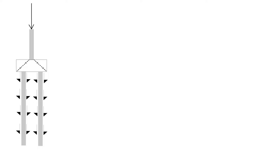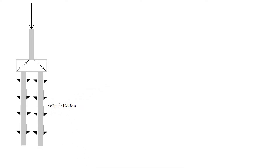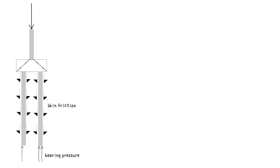End bearing, friction, or a mixture of both can be used to transfer loads into the underlying strata. Uplift and/or horizontal loads can also be resisted with piles. The ground bearing capacity of a pile is determined by the skin friction against the ground interface and the bearing of the base of the pile.